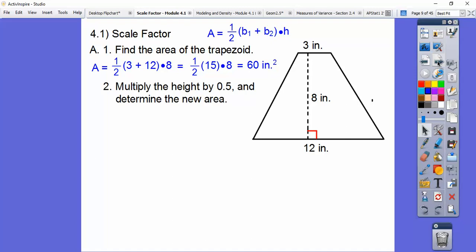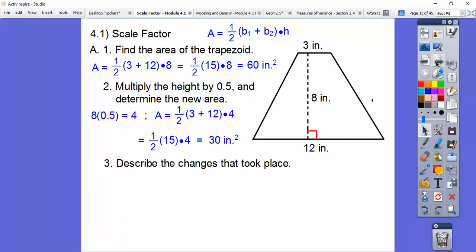Now let's multiply just the height by 0.5 and determine the new area. Multiplying by 0.5 is the same as dividing by 2, so the new height is 4. Instead of having an 8 here, we're going to plug in a 4 and calculate the new area. Check it out. When we multiply it by 0.5, look what happens to our area. Our area goes down by 0.5.